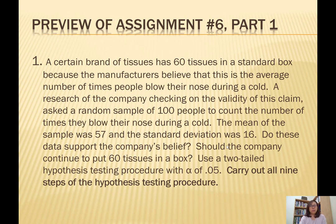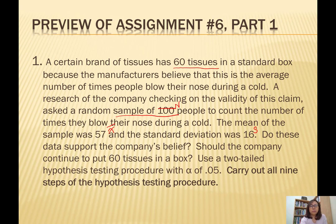Let's look at what information is given. We know there are 60 tissues in a box. We have a sample of 100, so that's your n. The sample mean is 57, so that's your x-bar, and the standard deviation is 16, so that's your s. Going back to 60 — since it's a mean that's known, not tested from a sample, that's your mu. So we now have mu of 60 and x-bar of 57 to compare.